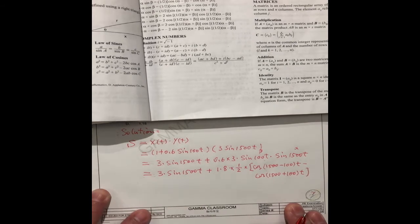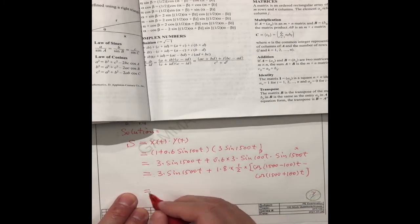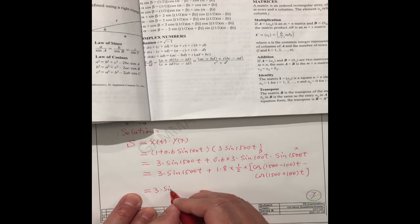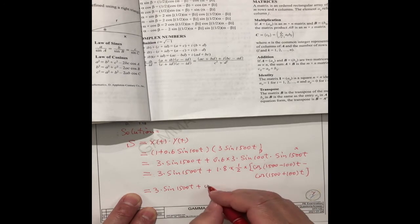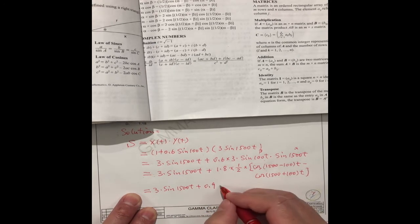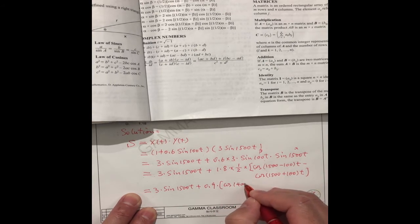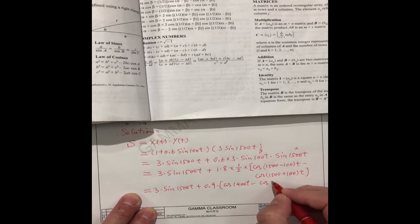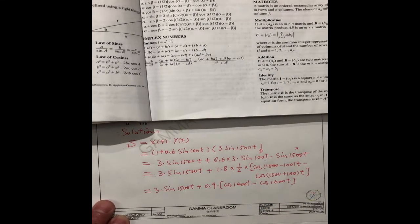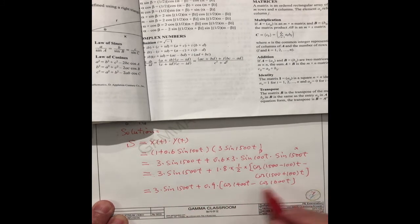So we can simplify this one: 3sin(1500t) + 0.9cos(1400t) - cos(1600t). So in this, you see here, only this part is 1600t.